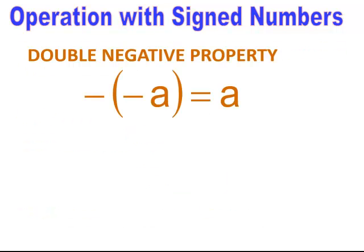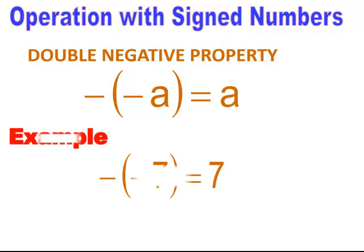A definition: a double negative. When you have a double negative, it turns the value to positive. So if I had a negative on the outside of parentheses with a negative number, I have a double negative and that means I really have a positive number seven, or a plus if it's mixed into an algebraic problem.